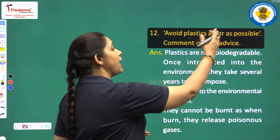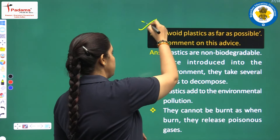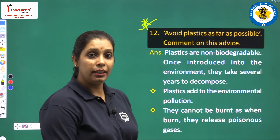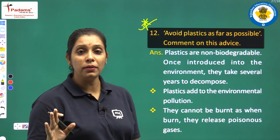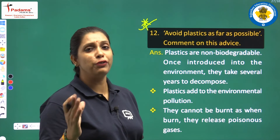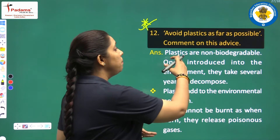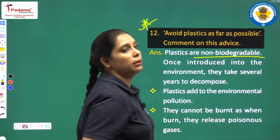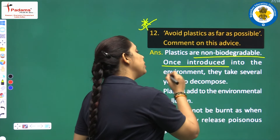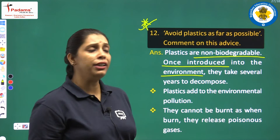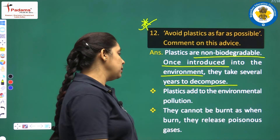Next question is: avoid plastic as far as possible — comment on this advice. This is an important question. We have to follow the 5R principle, and one R is refuse — avoid the use of plastic. Plastics are non-biodegradable; they cannot decompose easily. Once introduced into the environment, they take several years to decompose completely. Plastic adds to environmental pollution.